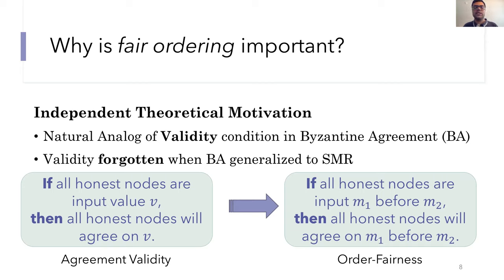The validity property says that if all of the honest nodes are input a value V, then all of the honest nodes should also output the value V. I haven't formally defined order fairness, but here's the gist. If all of the honest nodes are input M1 before M2, then all of the honest nodes should agree to output M1 before M2. So in a sense, order fairness is exactly the analog of validity extended to a more continuous version of the agreement problem.